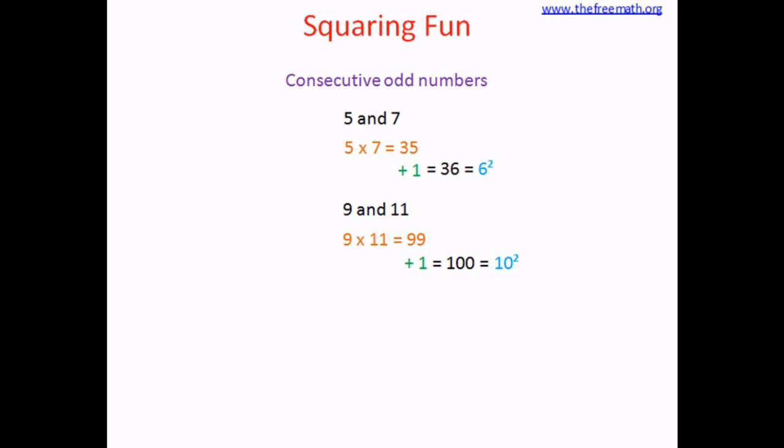So now you see what is happening. When you multiply two consecutive odd or even numbers and add 1 to it, you get a square of the number which is in between those two numbers. But where can I use it? Can you use it somewhere?